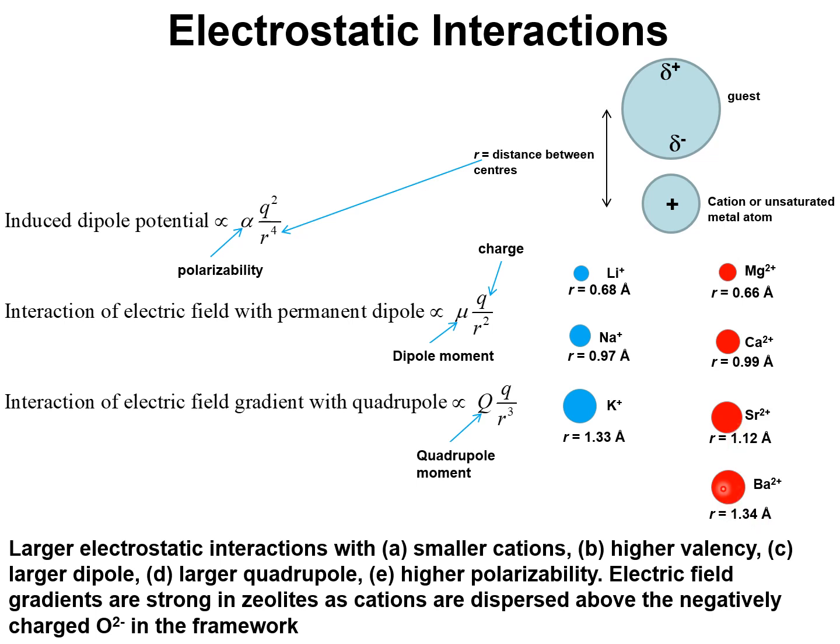A bivalent barium cation would contribute to a greater extent to the electrostatic interactions. And larger dipole, larger quadrupole, higher polarizability will all lead to larger magnitudes of electrostatic potentials.